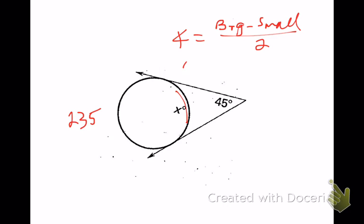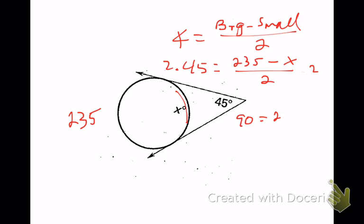The angle is 45 degrees and the big arc is 235, so: 45 equals (235 minus x) divided by 2. Multiply both sides by 2: 90 equals 235 minus x. Add x and subtract 90: x equals 145 degrees. Of course, we could have just subtracted 235 from 360 and gotten 145 degrees, but we want to get used to using the formula.